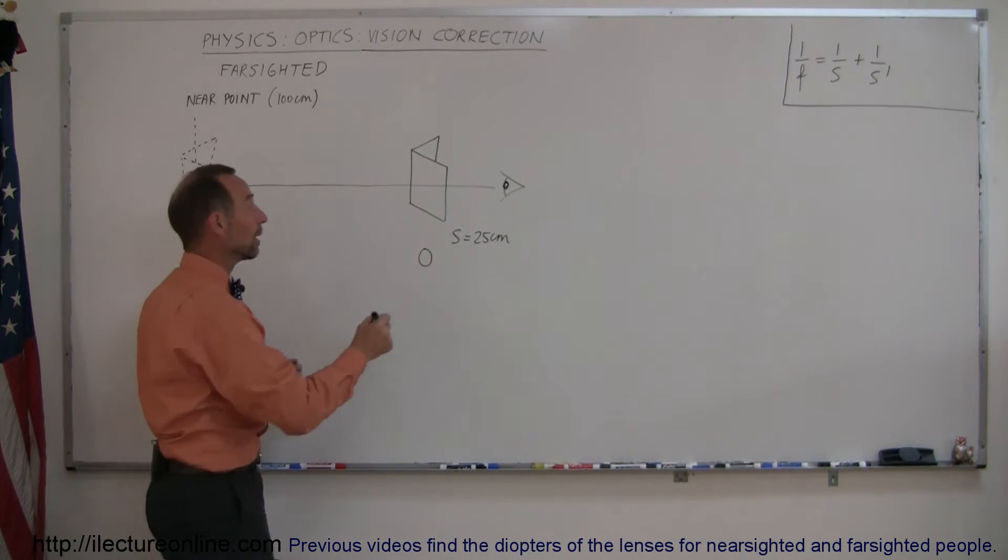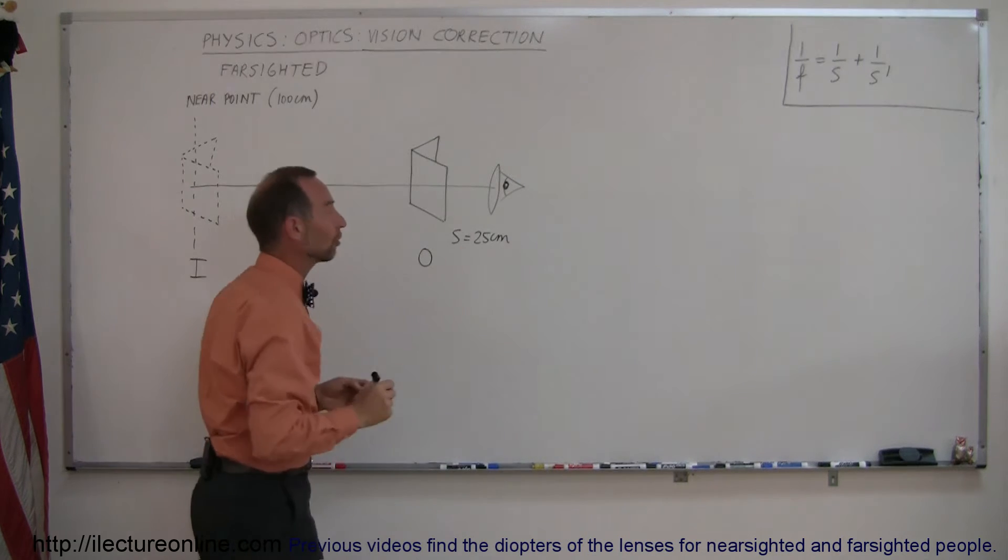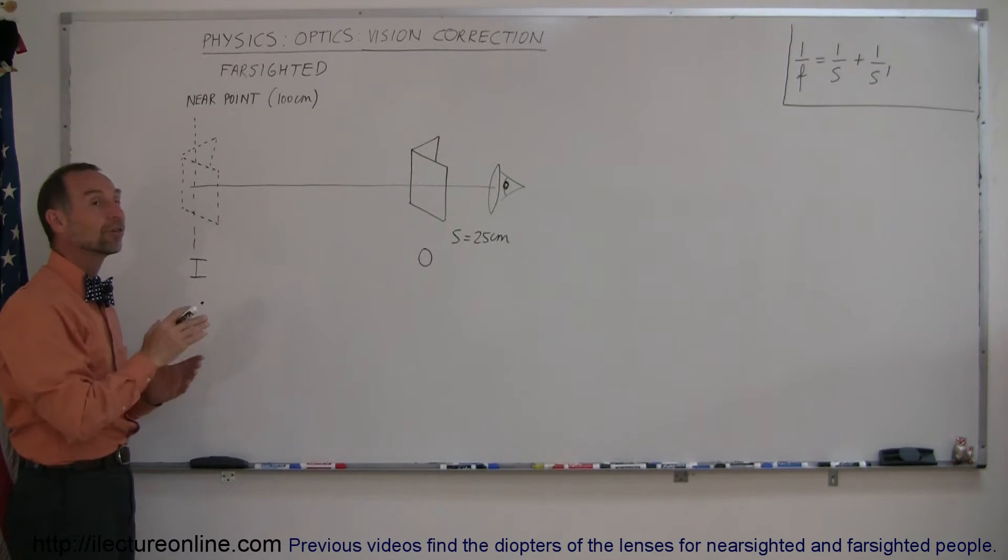So how do you correct that? Well, to do that, you want to put on some reading glasses with converging lenses to help you put an image where you can see it.